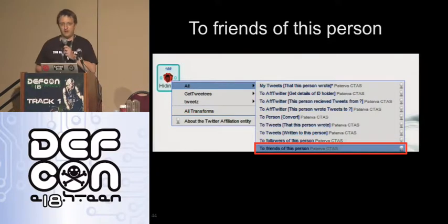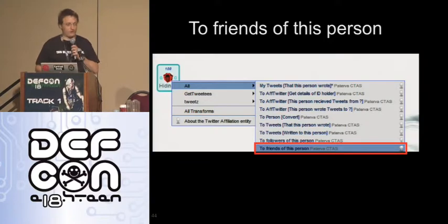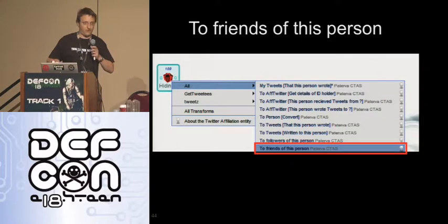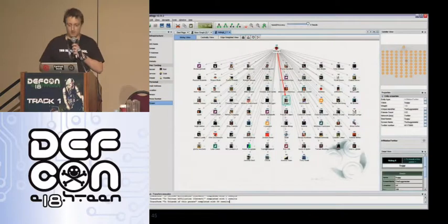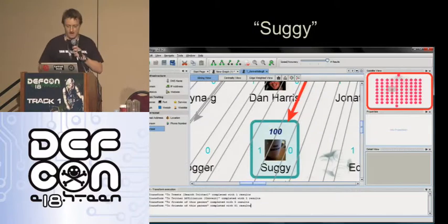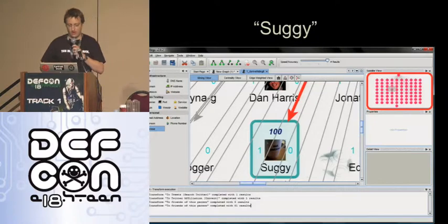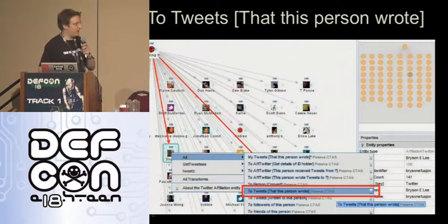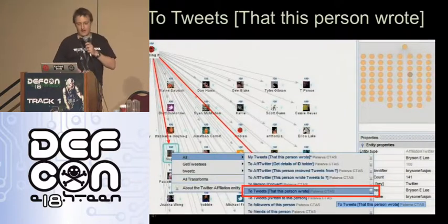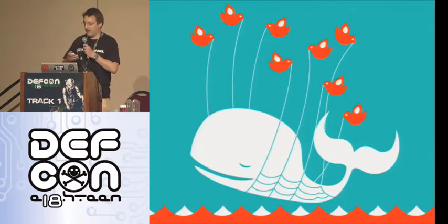Friends of this person — this is built into Maltego. You select an entity, apply a transform, and you get all of the people that are following at HidingIt. I picked one. You can apply this to all entities in the graph, or just one, or a bunch you select. I wanted to see the tweets this person had written, and that's where the fail whale on Twitter happened — that means bad things.